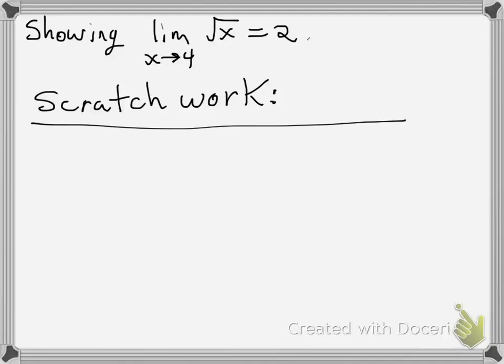Okay, so one of the examples we did in class is we showed that the limit as x approaches 4 of the square root of x is 2. So we're going to do a little scratch work to kind of help with the proof. This one's not quite as straightforward as the linear one we did in class. This one requires a trick.